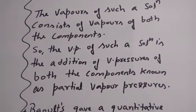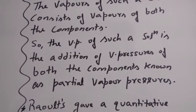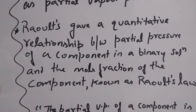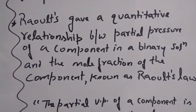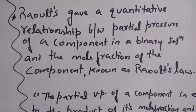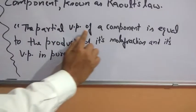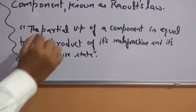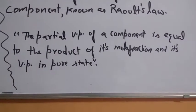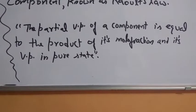The individual vapor pressure in the solution of the two components is known as partial vapor pressures. Raoult, a chemist from France, gave a quantitative relationship between partial vapor pressures of a component in a binary solution and the mole fraction of the component. That quantitative relationship is known as Raoult's Law. He stated that the partial vapor pressure of a component is equal to the product of its mole fraction and its vapor pressure in the pure state.